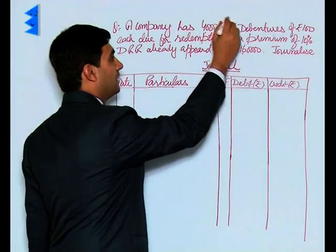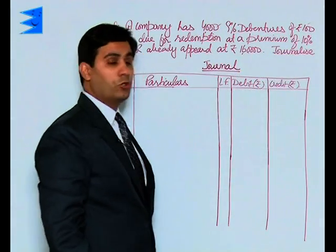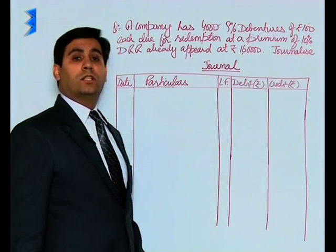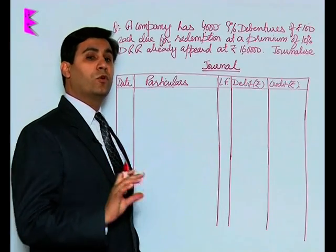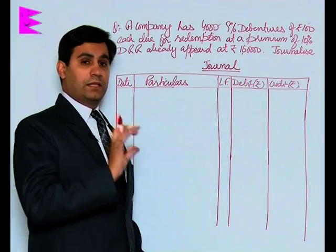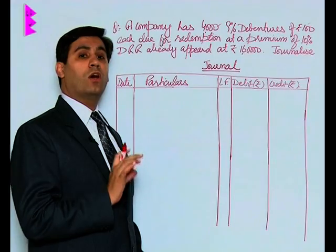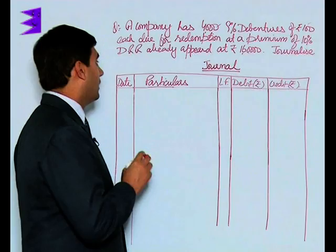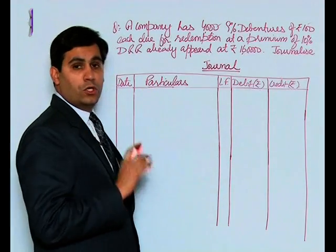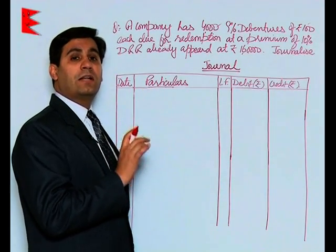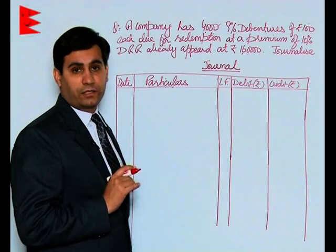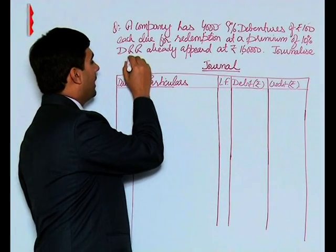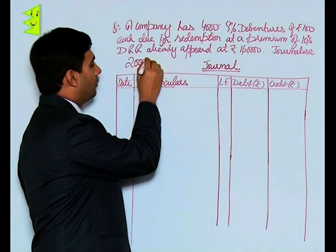Now students, 4,000 debentures of face value of Rs. 100 are to be redeemed. That means the total face value is Rs. 4,00,000. As per Section 117c, 50% of this value should be the amount that should be there in your DRR. That is, your DRR must show an amount equal to Rs. 2,00,000.